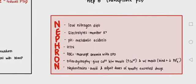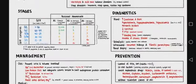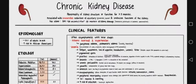There is a mnemonic for CKD: NEPHRON. N stands for low nitrogen diet, E for electrolyte monitoring, P for pH and metabolic acidosis and hypertension, H for managing hypertension, R for RBCs to manage anemia, O for osteodystrophy, and N for avoiding nephrotoxins. This covers the whole detailed chart for CKD.